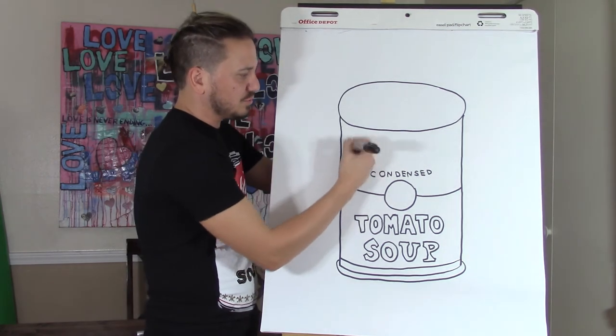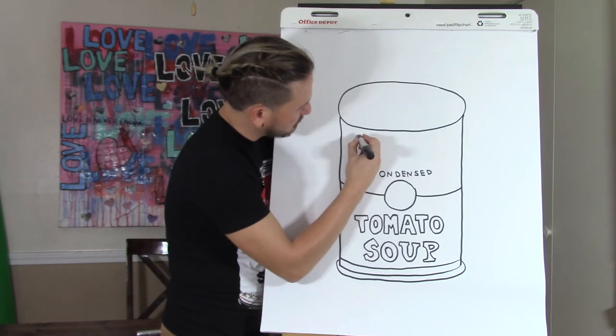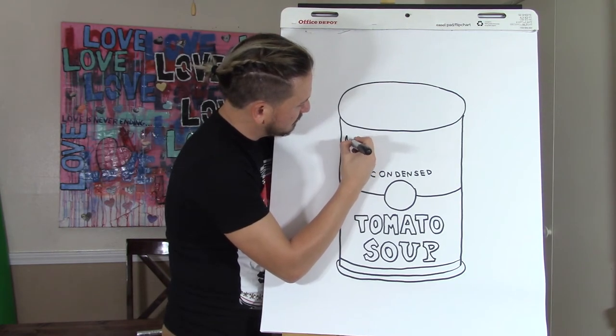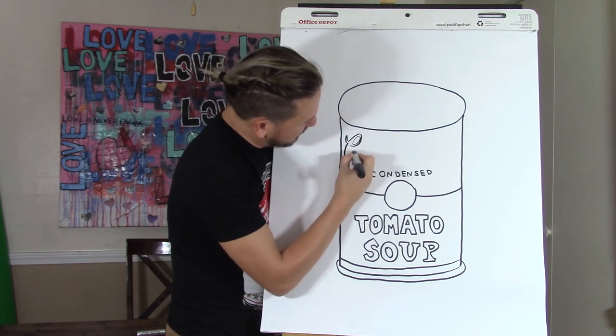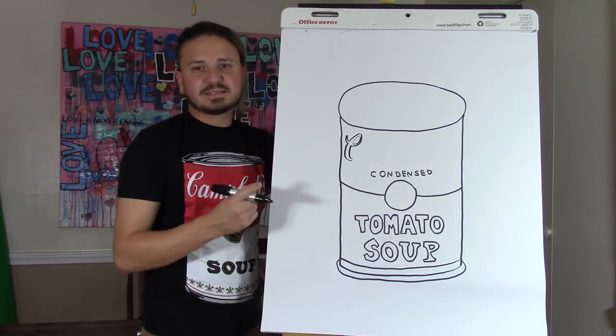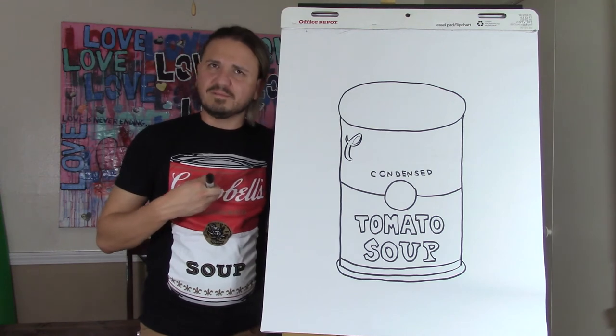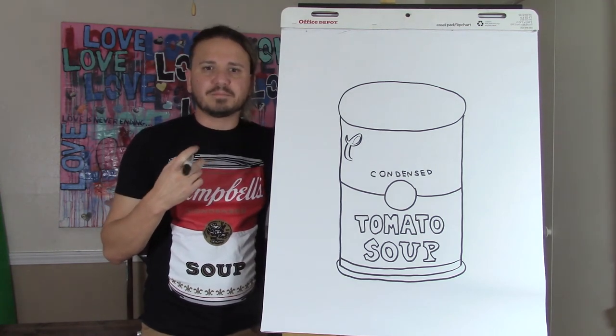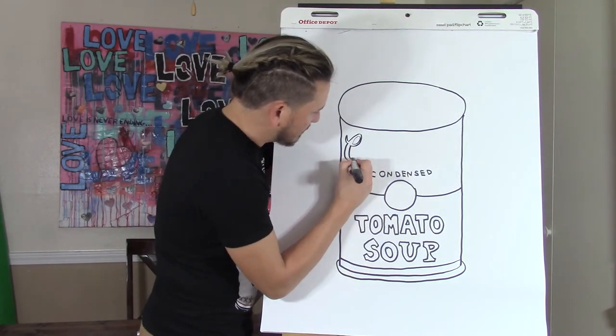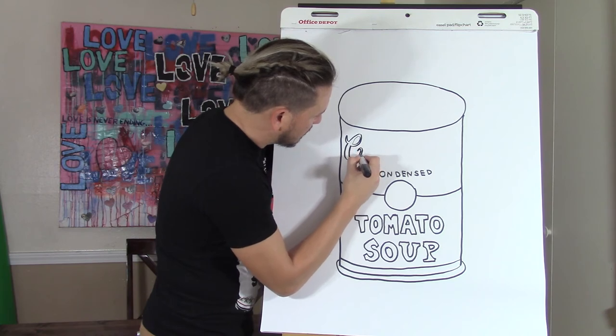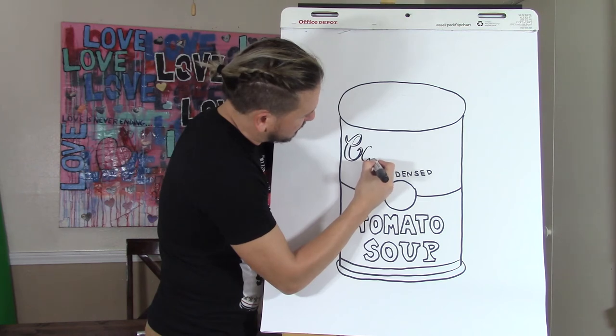Now we're going to write Campbell's and it's in cursive. So if you don't know how to do bubble letters in cursive, I recommend you just write it out and then just trace around it. He was obsessed with celebrity and he had a lot of celebrity fans. He did a lot of Marilyn Monroe paintings, Michael Jackson, Che Guevara, Liz Taylor amongst others.